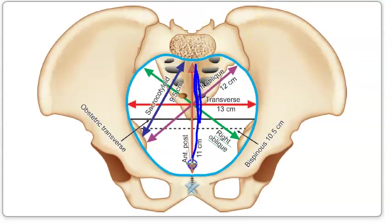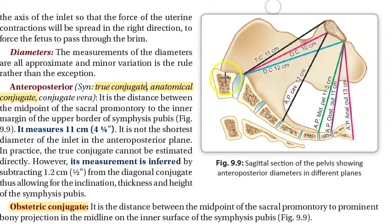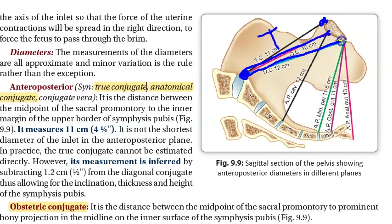In the anteroposterior diameter, there are three conjugates. All three originate from the midpoint of the sacral promontory. Going to the upper border is called the true conjugate. The middle one is called the obstetric conjugate. And from the midpoint of the sacral promontory to the lower part is the diagonal conjugate.